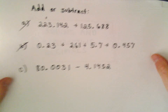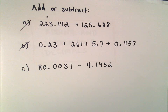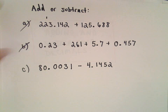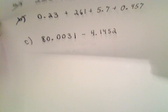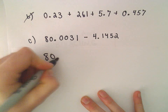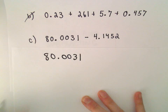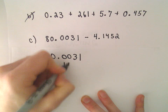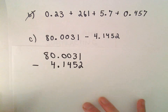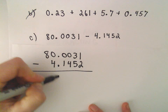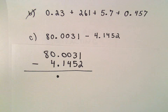Here we'll do an example involving subtraction of decimals. So we have 80.0031 minus 4.1452. I'm going to subtract, keeping in mind that there is a decimal place, but treating it as normal subtraction — just the same normal subtraction technique.